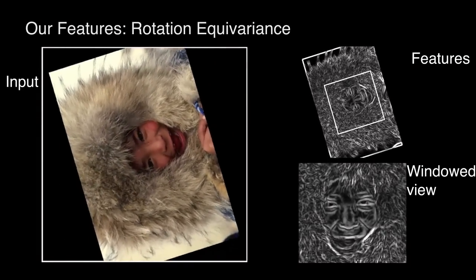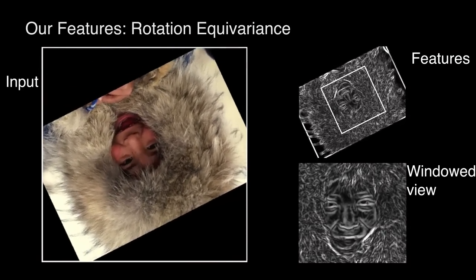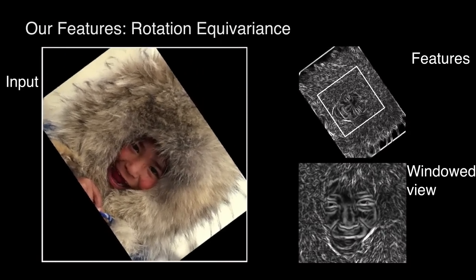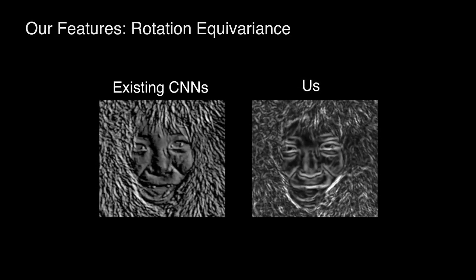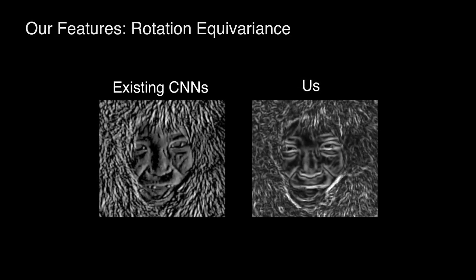Returning to our motion compensated view of the feature maps we see that indeed harmonic networks are able to preserve deep features under rotation. Viewing the two motion compensated windows side by side, the extra stability we are granted becomes apparent.